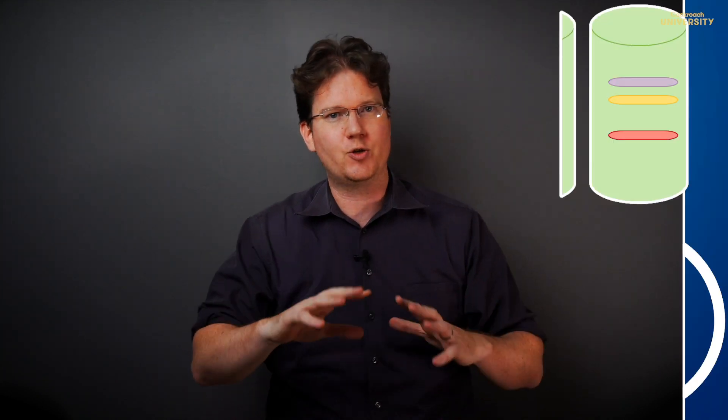Recall that CockroachDB organizes its data into a key space divided into ranges and distributes replicas of each range throughout the cluster based on the replication factor. For CockroachDB, each range defines a Raft group.